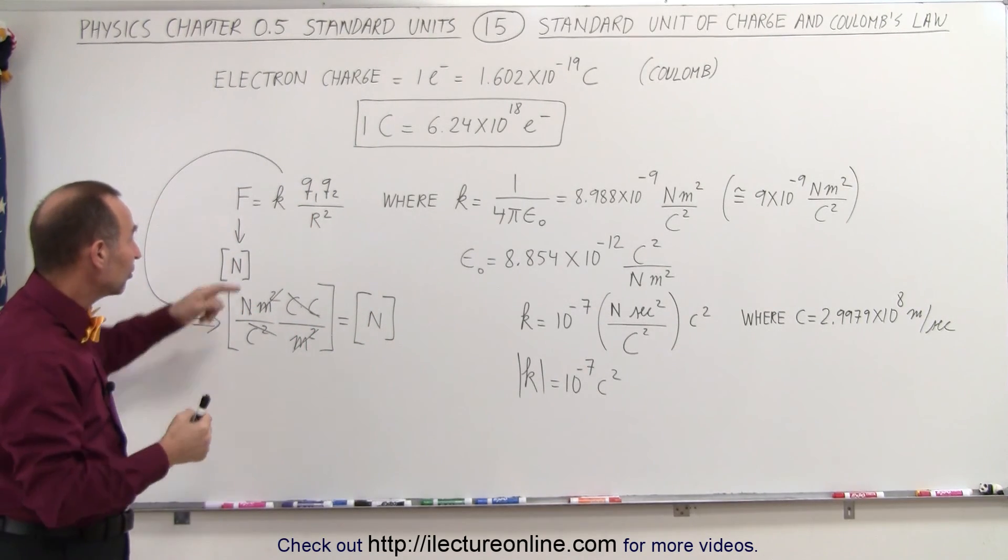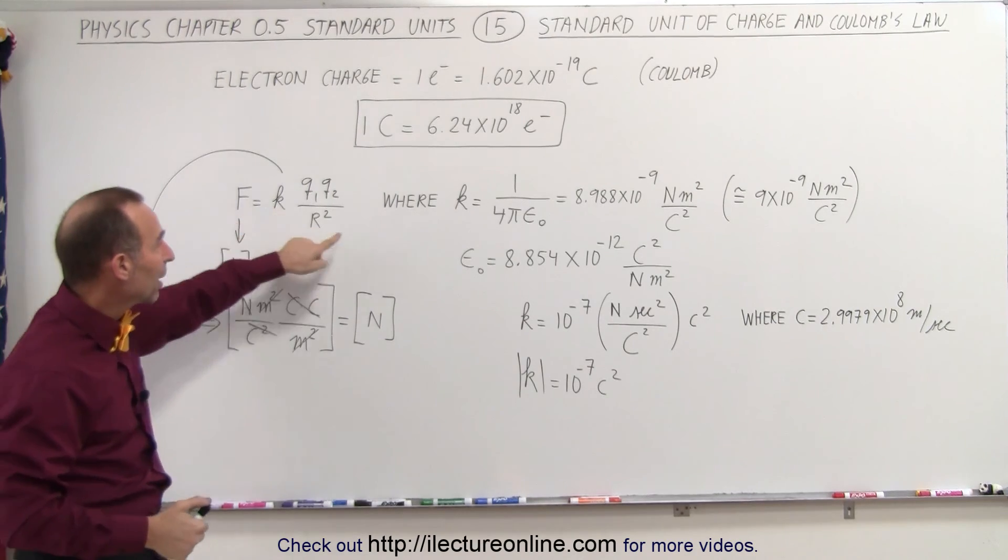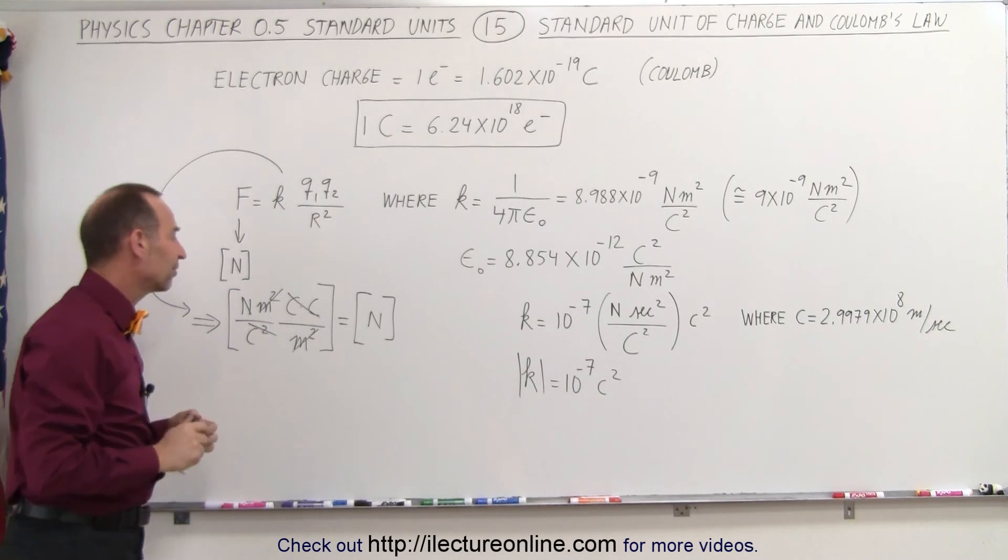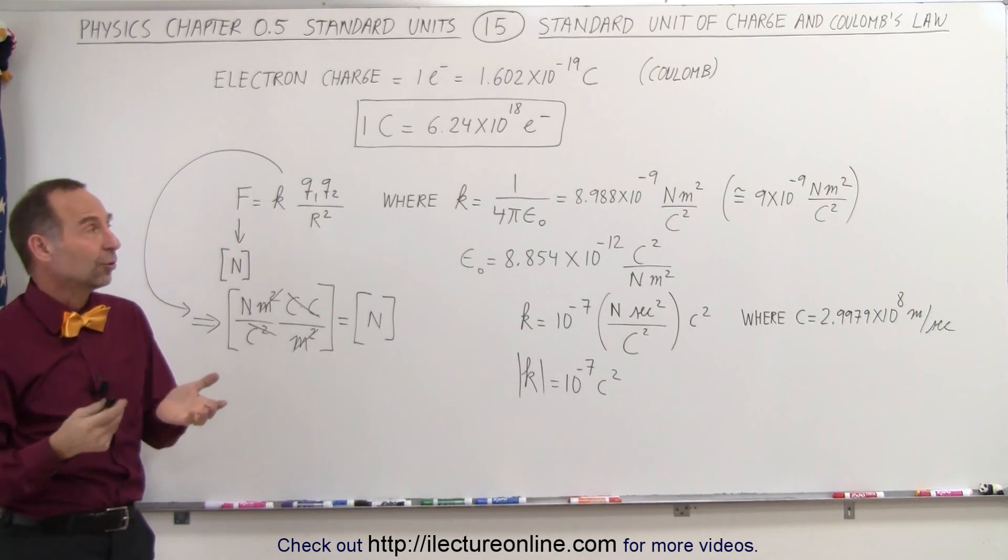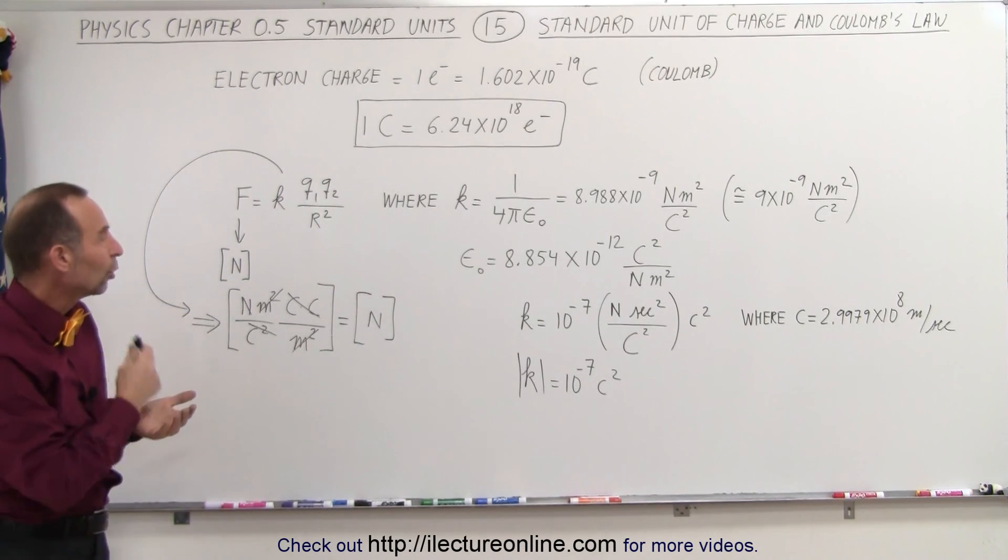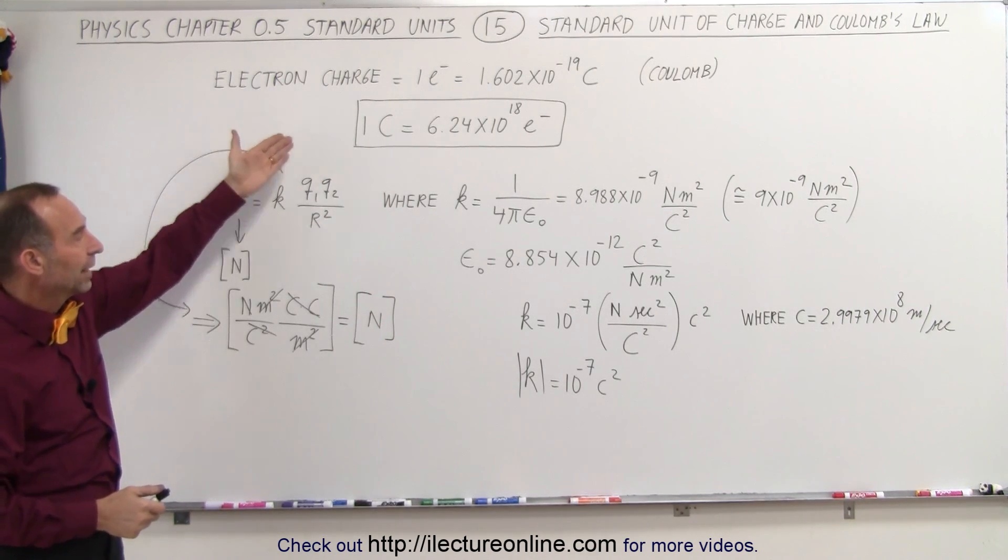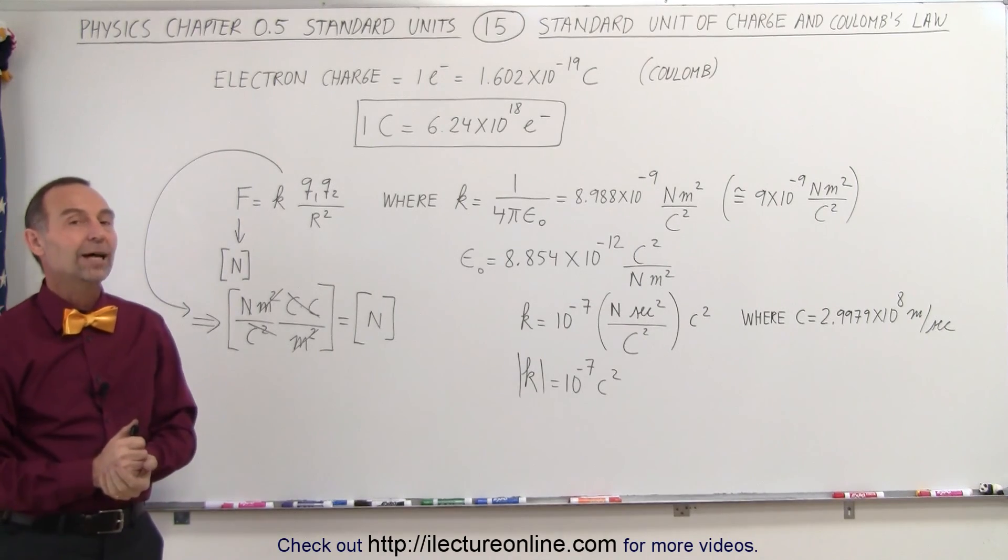Of course, that was done intentionally by giving K the proper units so that it would reduce to newtons on both sides of the equation. And that's what we call Coulomb's law, and the units associated with the standard charge, and the constants K and epsilon sub-nought.